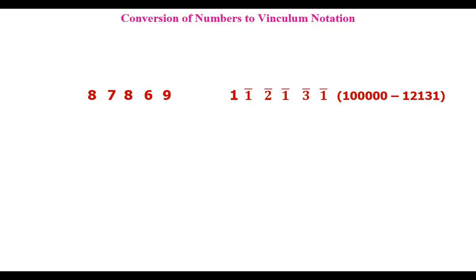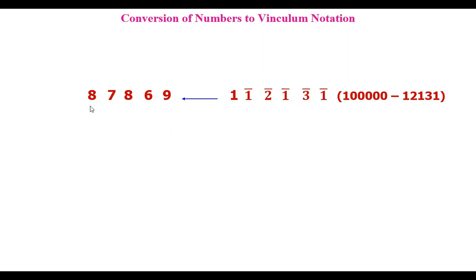Suppose you want to get the decimal system back from vinculum. The last number is subtracted from 10, and all other negative numbers use 9. So: 9 minus 3 is 6; 9 minus 1 is 8; 9 minus 2 is 7; 9 minus 1 is 8; and 1 minus 1 is 0. This is the conversion from vinculum back to decimal.